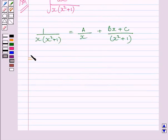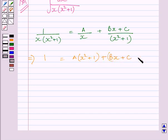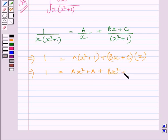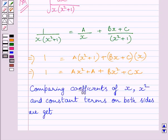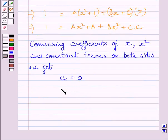This further implies 1 is equal to A multiplied by x squared plus 1, plus Bx plus C multiplied by x. Expanding, we get 1 is equal to Ax squared plus A plus Bx squared plus Cx. Now comparing coefficients of x, x squared, and constant terms on both sides, we get C is equal to 0.